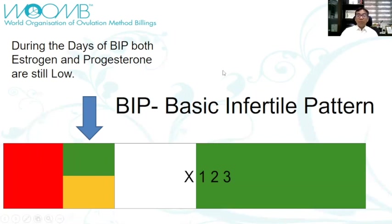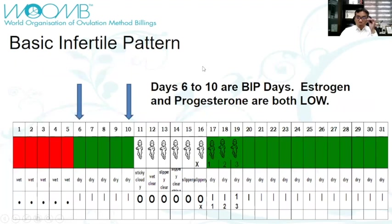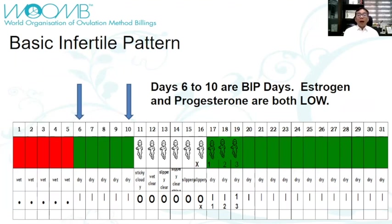So that would be BIP — the dry days after menstruation. The BIP days in this particular chart are from day 6 to day 10. So from day 6 to day 10, the hormones estrogen and progesterone are both low. That would be for BIP.